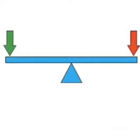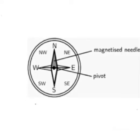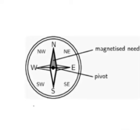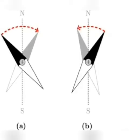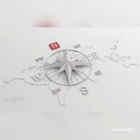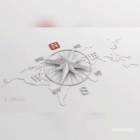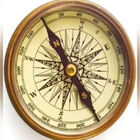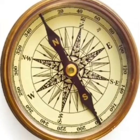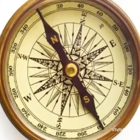A pivot is a fixed center point on which something can rotate. The magnetic compass needle is pivoted so that it can rotate freely and point out the correct direction. The pivoted magnetic needle of the compass is enclosed in a small round box having a glass top.